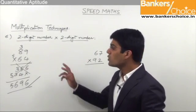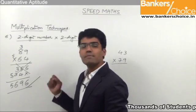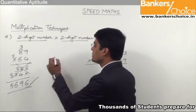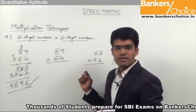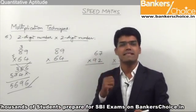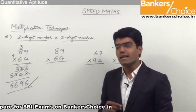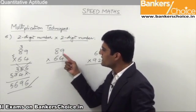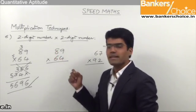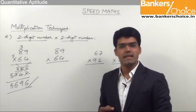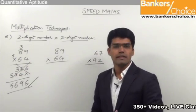So let us understand how to multiply two such numbers like 89 and 64 without writing these many steps on paper. The two numbers here are 89 and 64. Multiplication of these two numbers in this technique involves three steps. The first step is to multiply both the unit spaces. The second step is cross multiplication of unit spaces and 10 spaces. And the third step is to multiply the 10 spaces. In these three steps, we can directly write down the answer 5696 without writing all the intermediate steps.